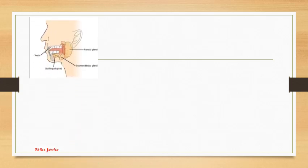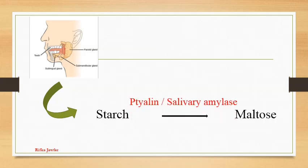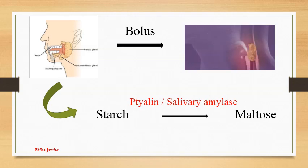Digestion begins in the buccal cavity with the help of teeth, salivary glands and tongue. Mainly mechanical digestion takes place. The chemical digestion taking place here is conversion of starch to maltose by ptyalin or salivary amylase. Then the food is converted into a bolus and sent to the pharynx.